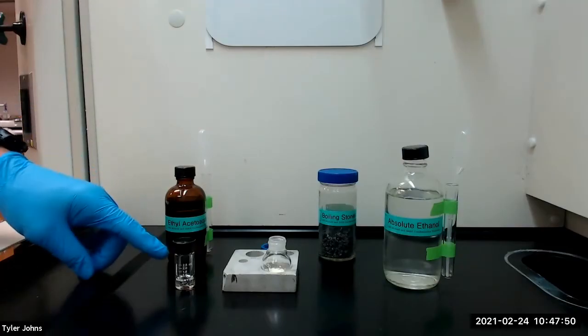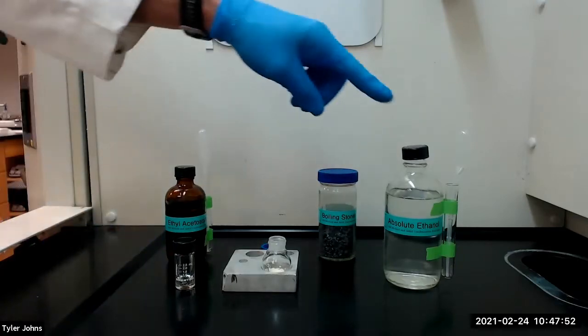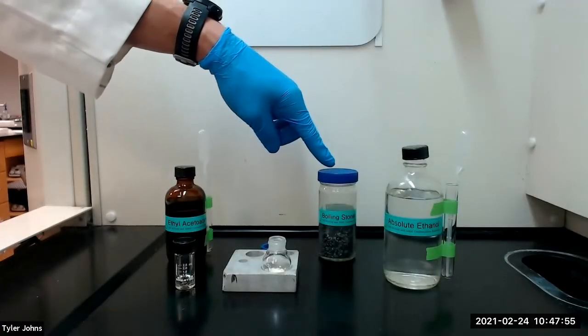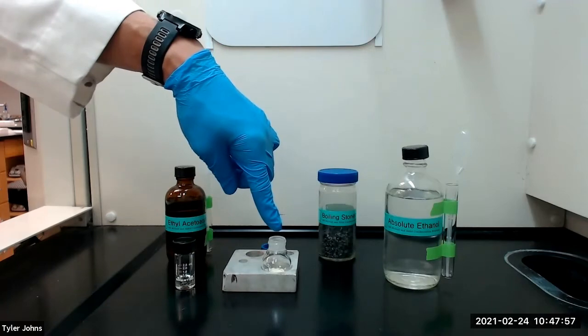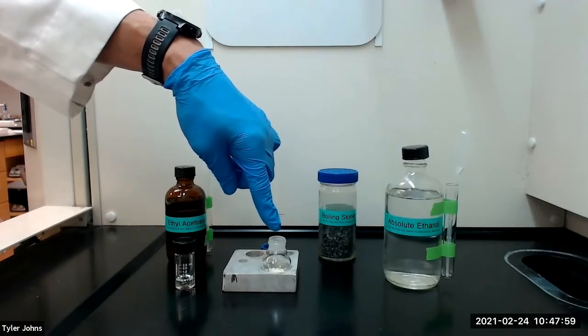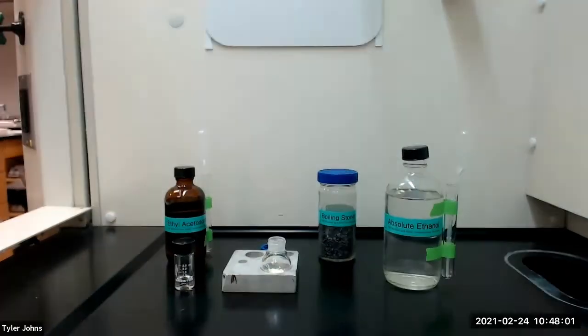We will next add the ethyl acetoacetate, 5 milliliters of absolute ethanol, and a boiling stone to the 10 milliliter round bottom flask. We will then swirl the flask until most of the solid has dissolved.